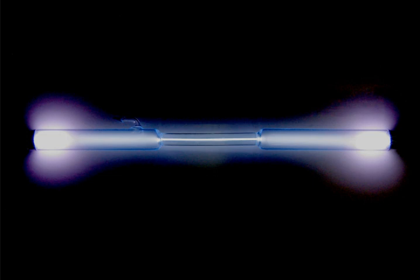Xenon was discovered in England by the Scottish chemist William Ramsay and English chemist Maurice Travers in September 1898, shortly after their discovery of the elements krypton and neon. They found xenon in the residue left over from evaporating components of liquid air. Ramsay suggested the name xenon for this gas from the Greek word xenon, neuter singular form of xenos, meaning foreign, strange, or guest.